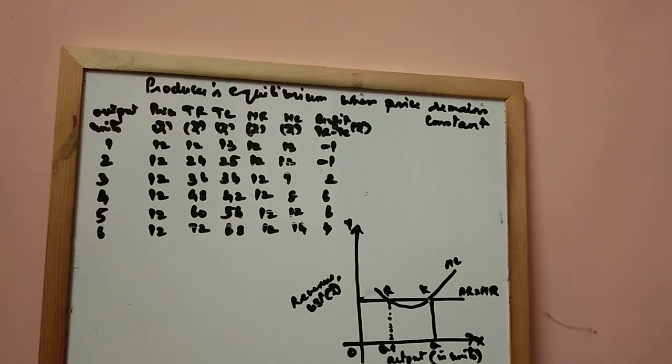So although MC is equal to MR is also satisfied at point R, it is not the point of equilibrium as it satisfies only the first condition. What is the first condition? MC is equal to MR. So the producer will be at equilibrium at point K when both the conditions are satisfied.